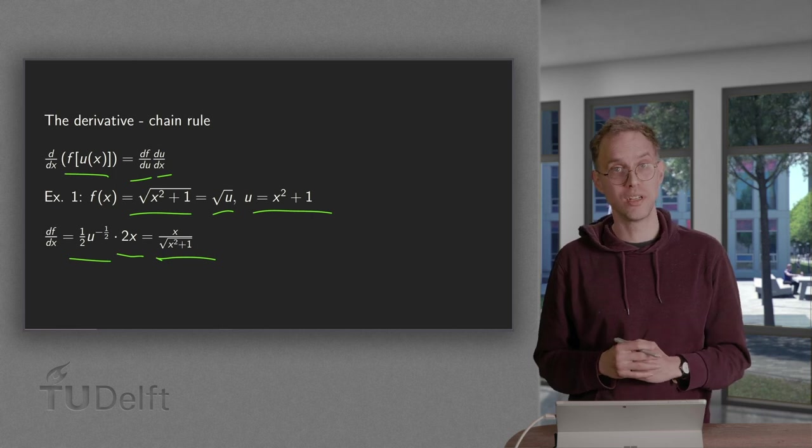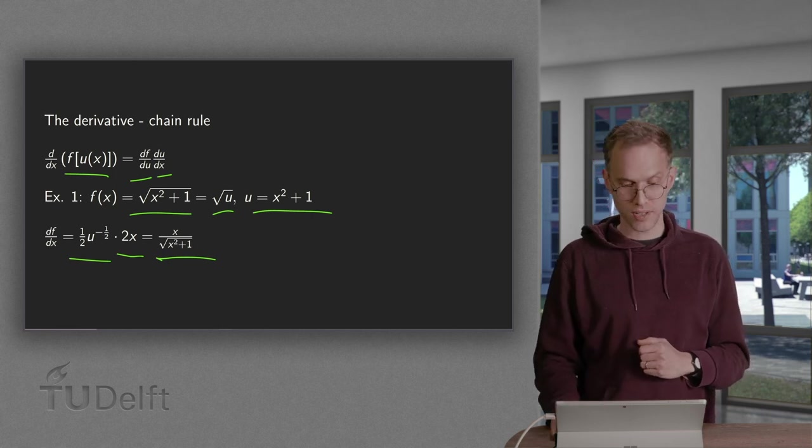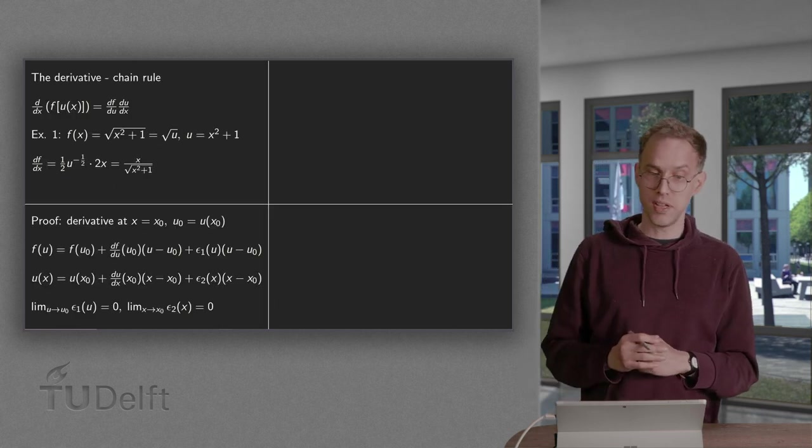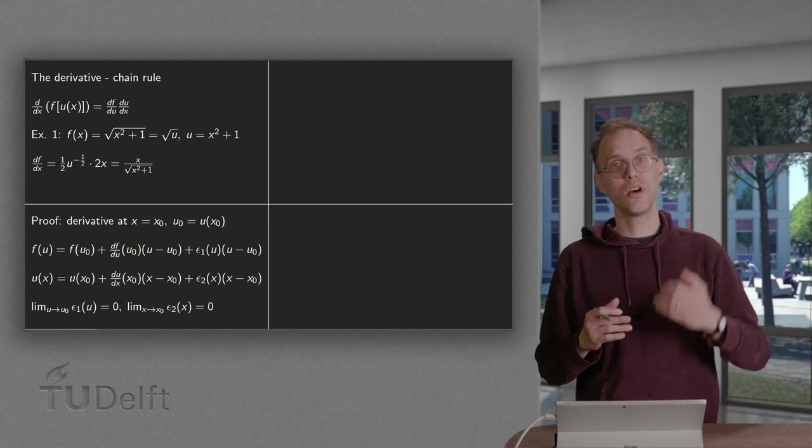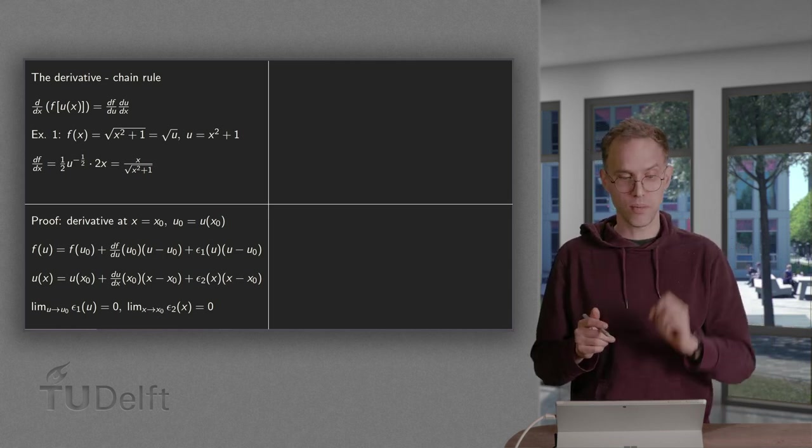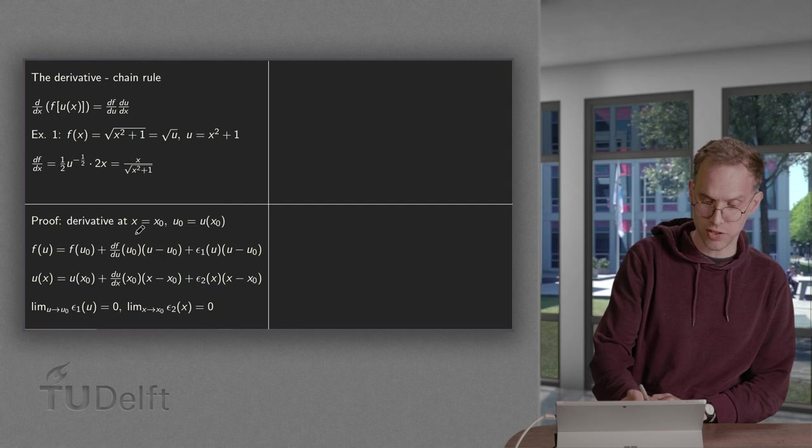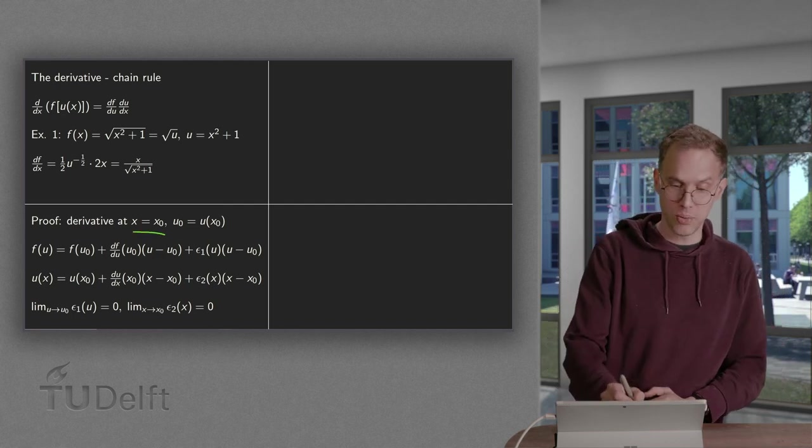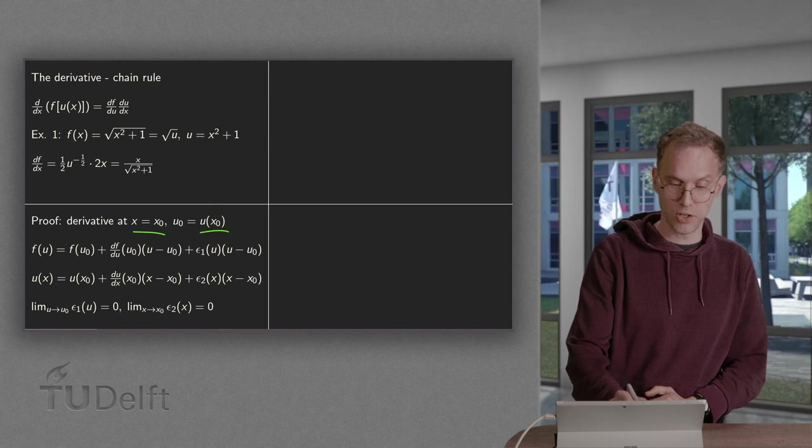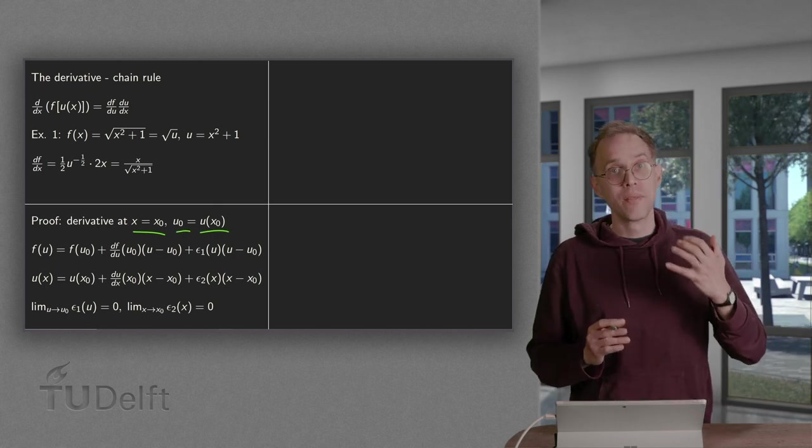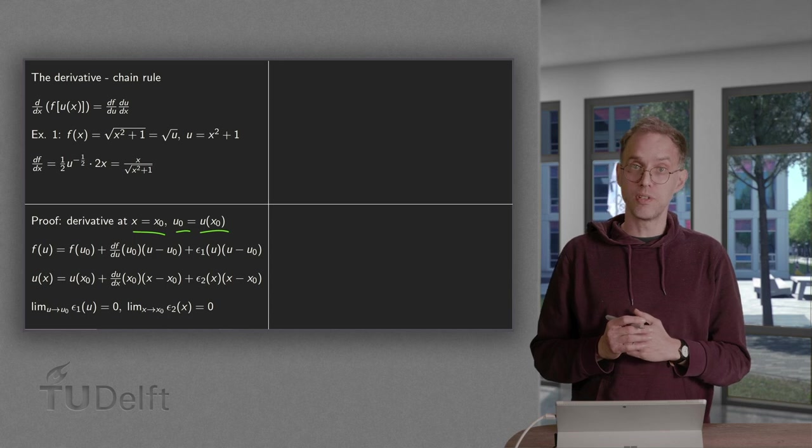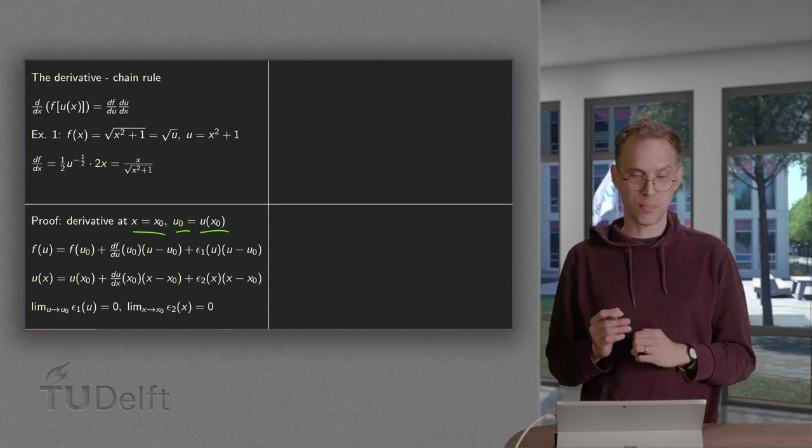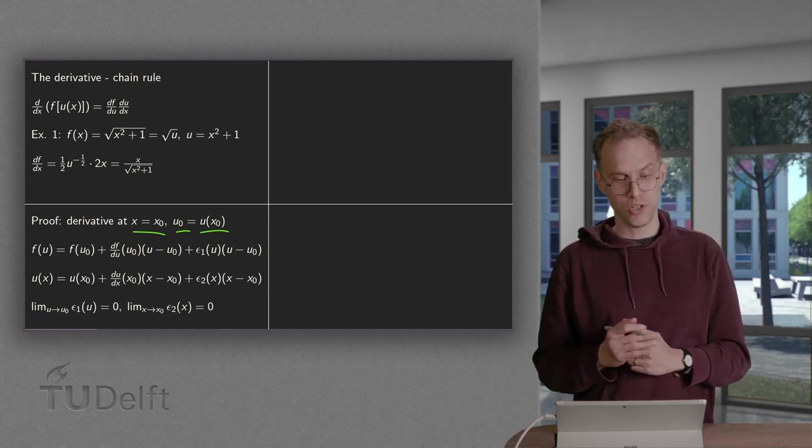So that is how you use it. But why does it hold? For that we need to be a bit careful. In order to do so we look at the derivative at a single point at x equals x0 and if x equals x0 then u equals u at x0 is called u0. Now, we compute the derivative at this particular point x equals x0 equals u0.